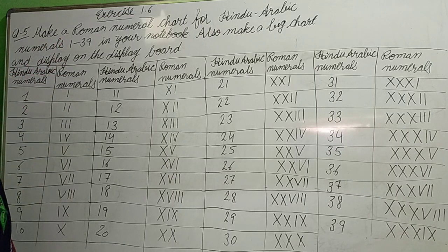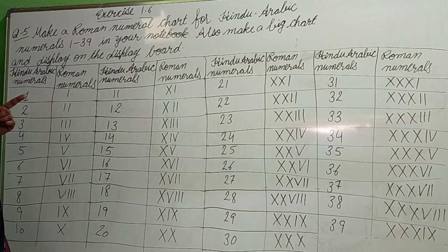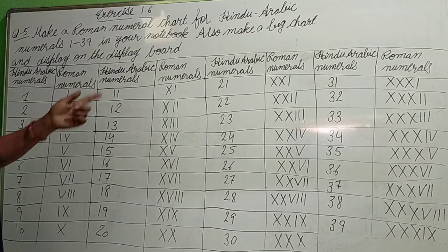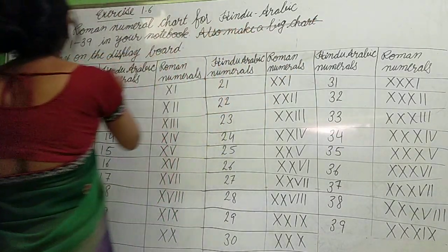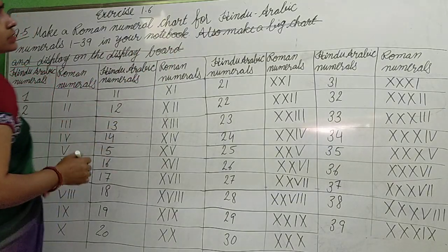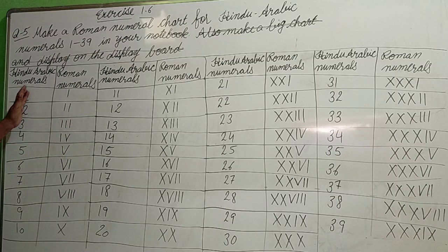Question 5: Make a Roman numeral chart for Hindu Arabic numerals 1 to 39 in your notebook. Make a Roman numeral chart from Hindu Arabic to Roman numeral. Also make a big chart and display it. This work we have to do. We have to write both Hindu Arabic numbers and the Roman numerals. I have already written 1 to 39. See: 1 — I stands for one.